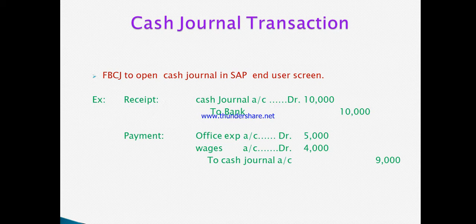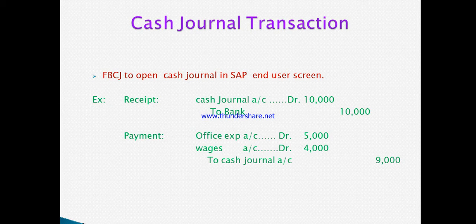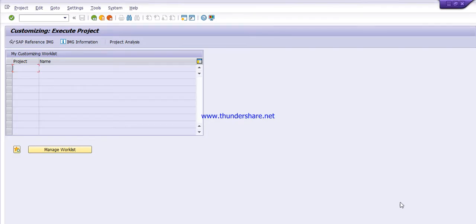The journal entry for cash receipt is: cash journal account debit 10,000 to bank 10,000 rupees. For payment, the entry will be: office expenses account debit 5,000, wages account debit 5,000, and to cash journal account credit 9,000. This is an example entry. Now we will do a practical on SAP — go to the SAP screen and run the T-code FBCJ.